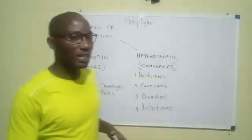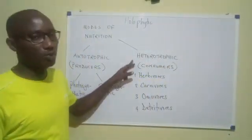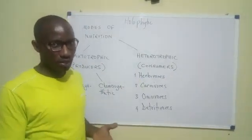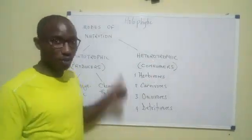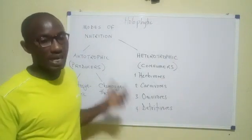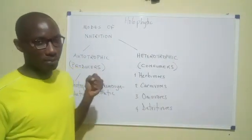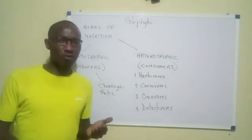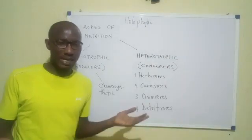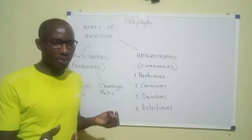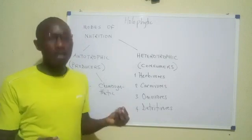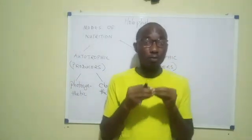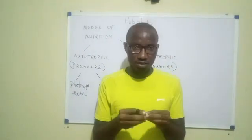On the other side, we have organisms that do not produce their own food, so we call them consumers. The consumers wait for the producers to make food and then take such food from them. Now, what do producers make their food from? From inorganic raw materials like carbon dioxide and water. But to bring carbon dioxide and water together to form food, they need energy.